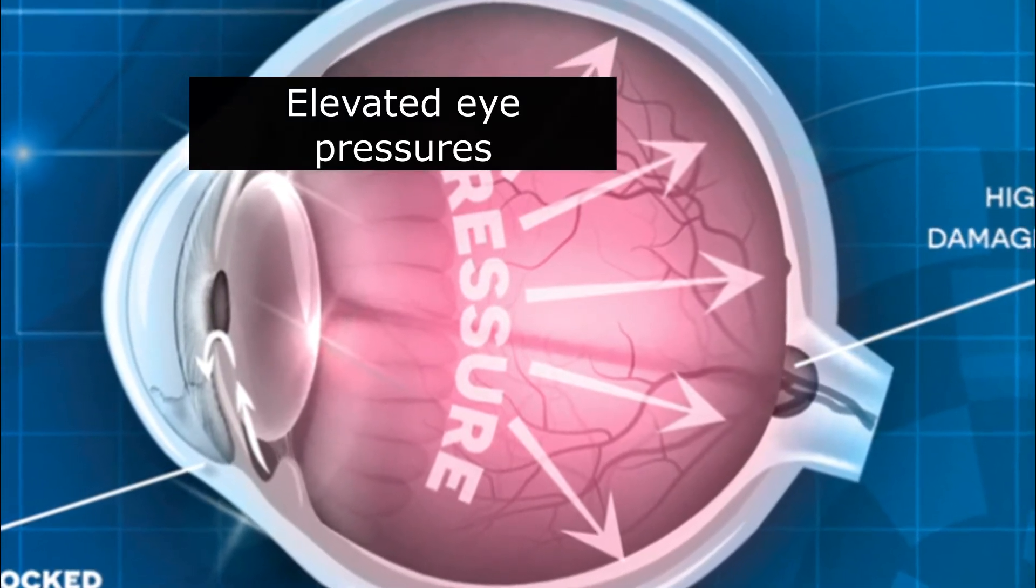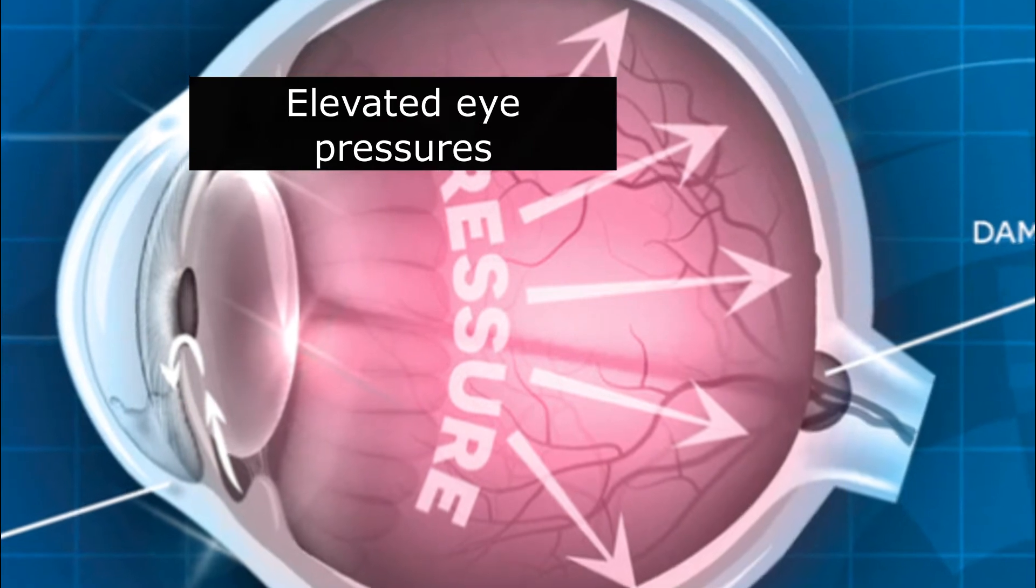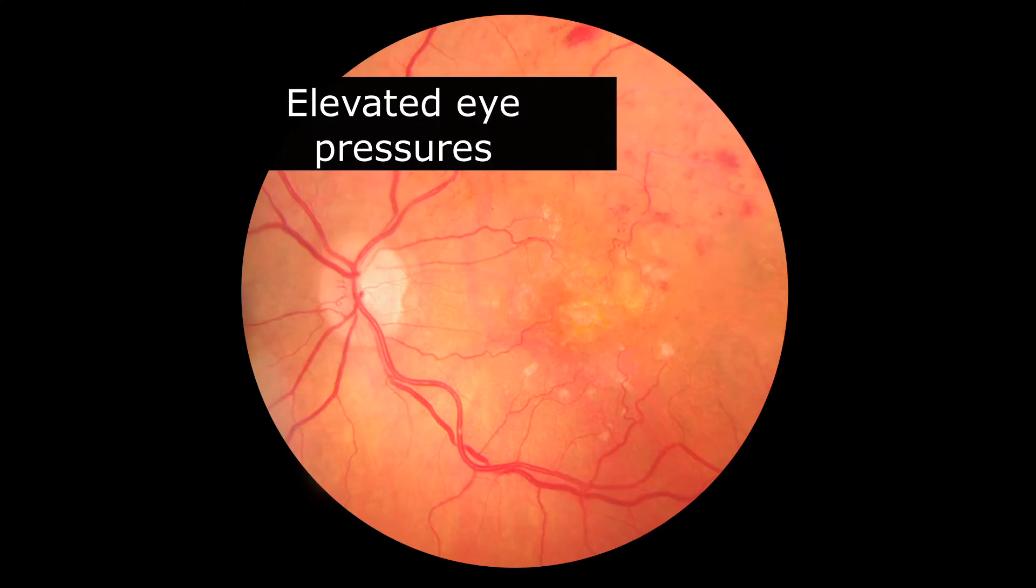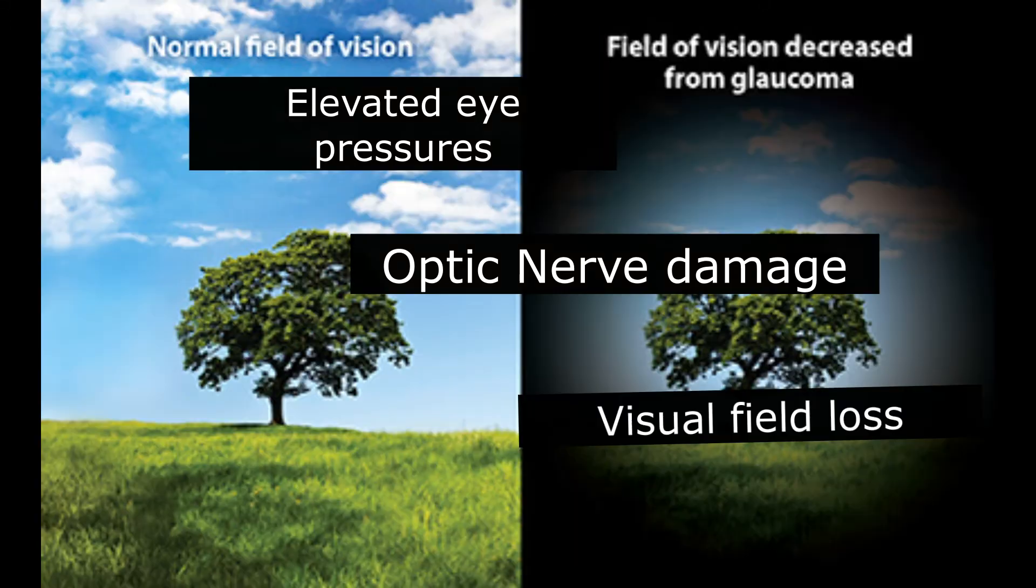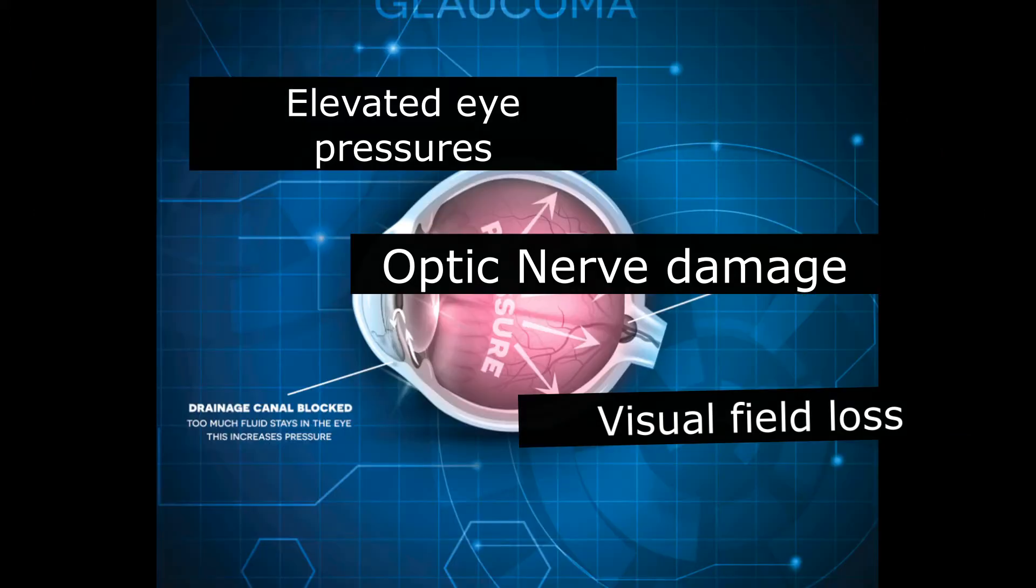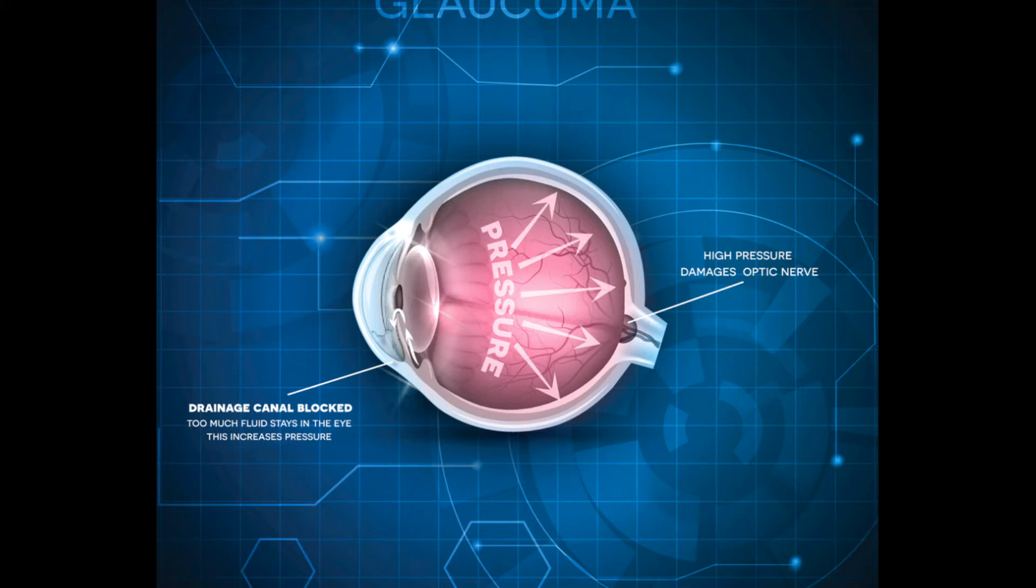And that is elevated pressures in the eye, nerve damage called the optic nerve damage, and visual field loss. So let me explain how these three things happen. Glaucoma is not just elevated eye pressures as some people may think.